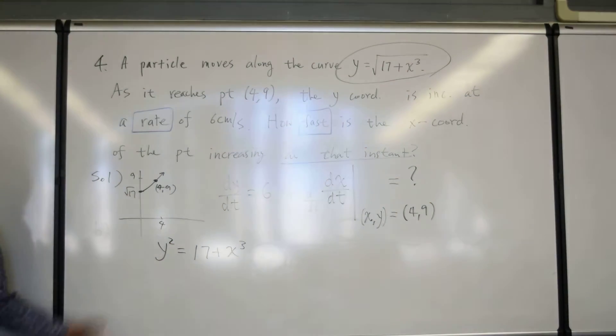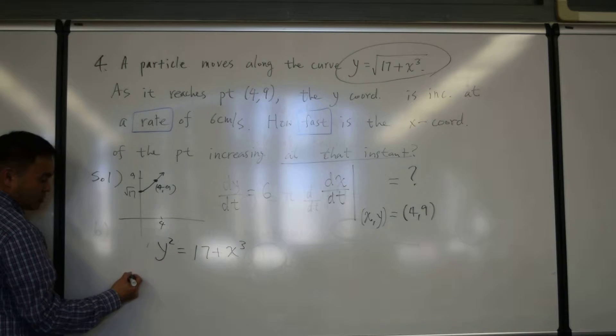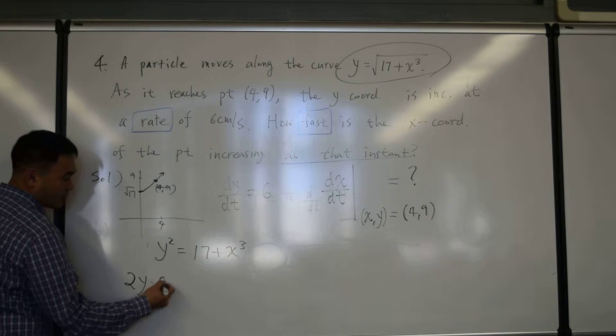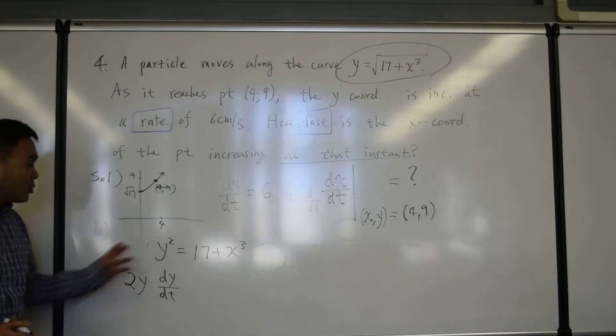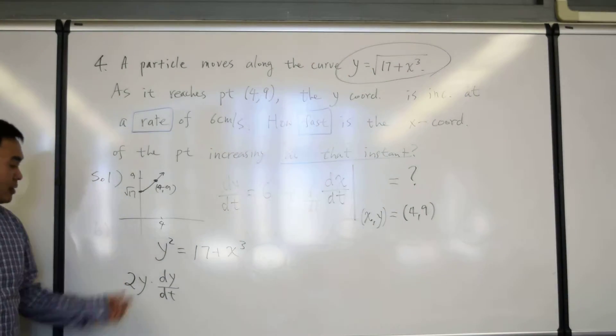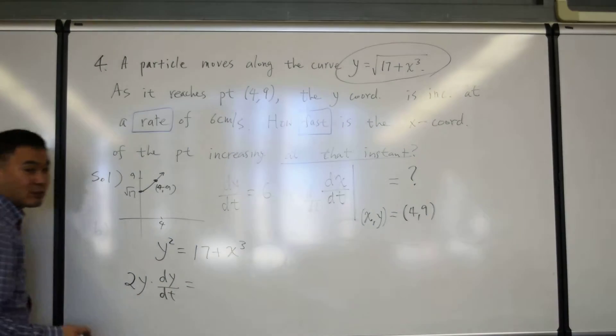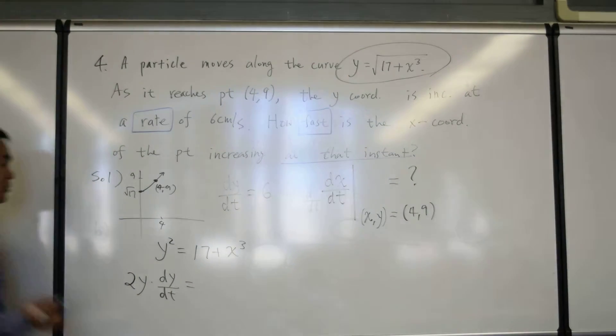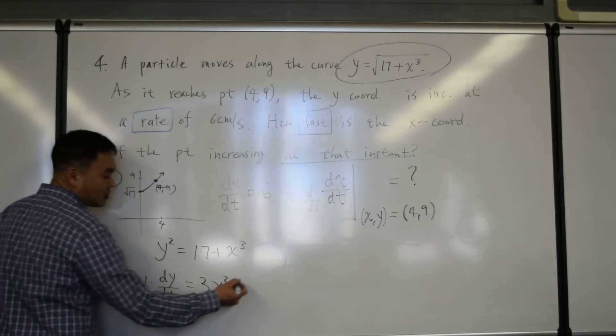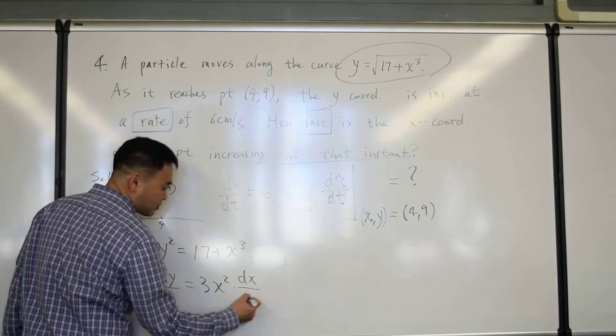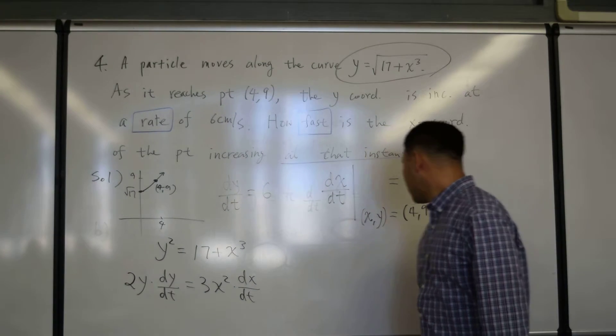And then, I decide to differentiate both sides. What do you get if you differentiate y squared? 2y and then dy dt. Remember, you're trying to differentiate both sides by t, and x and y are both functions of t, so you have to use the chain rule. If you differentiate 17, you get 0. If you differentiate x cubed, you get 3x squared times dx dt. And that's about it.